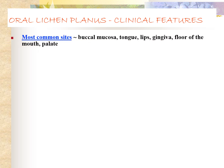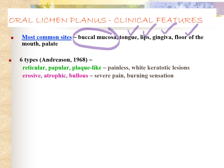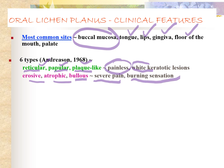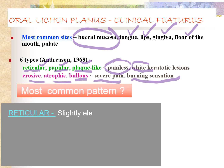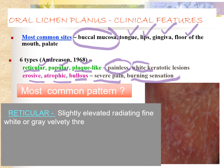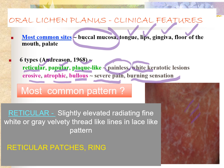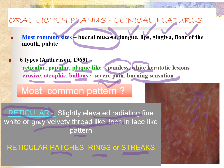Now for oral lichen planus clinical features: the most common site is buccal mucosa — very important viva question. Other sites include tongue, lips, gingiva, floor of mouth, and palate. There are six types in the mouth: reticular, papular, plaque-like, erosive, atrophic, and bullous. The first three types appear white and are usually painless. In lace-like pattern they can make patches, rings, or streaks. Most common site is buccal mucosa; most common pattern is reticular pattern.